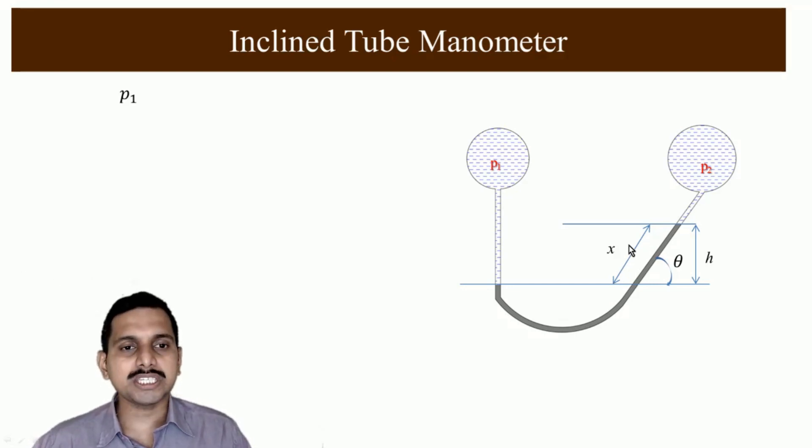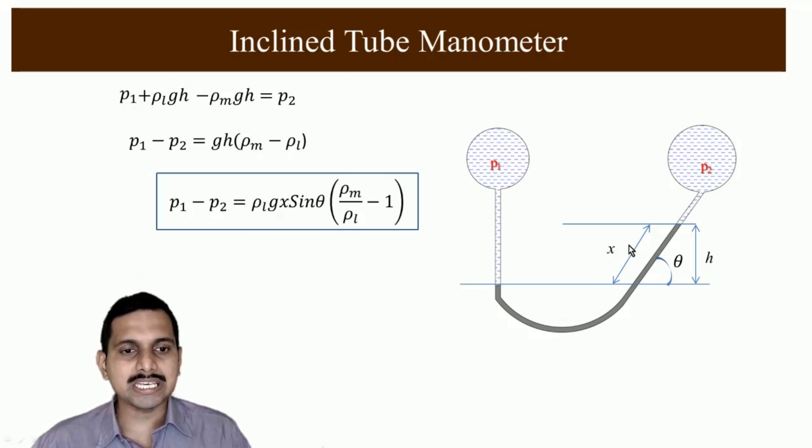What we have to change? Just like U tube manometer everything else remains the same, only thing that changes is instead of h we have to put x sin theta and that is it. We have to measure by what angle we are tilting it with respect to horizontal and we have to measure x, and x sin theta gives h. You have to plug into this equation and you get the answer. That is the main thing behind inclined tube manometer.